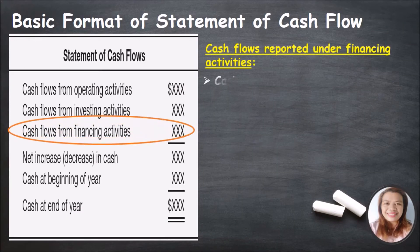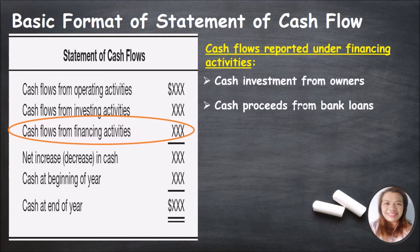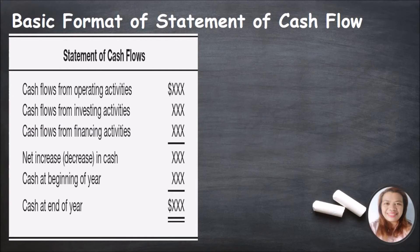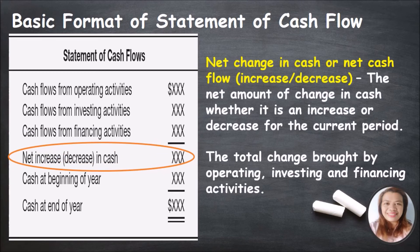Cash flows reported under financing activities include cash investment from owners, cash proceeds from bank loans, cash distributed to owners, cash withdrawals of owners, and repayment of bank loans. The net change in cash is the increase or decrease in cash — the net amount of change whether an increase or decrease for the current period — and is the total change brought by operating, investing, and financing activities.